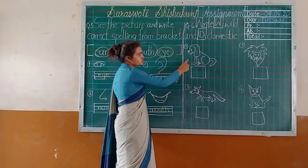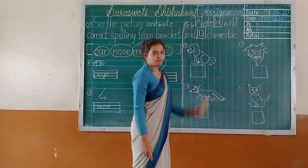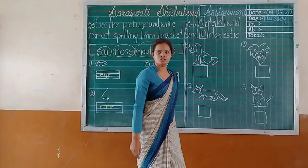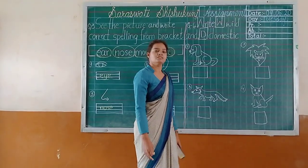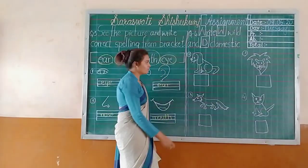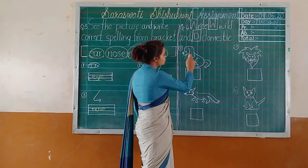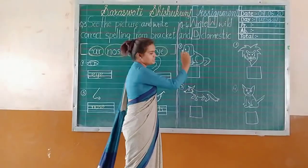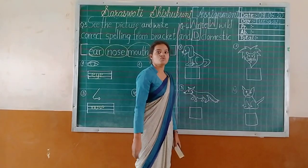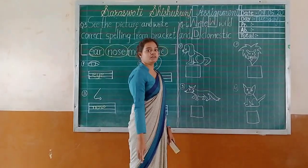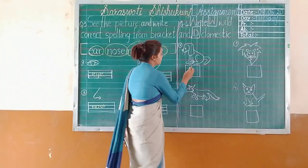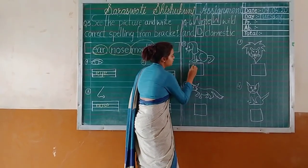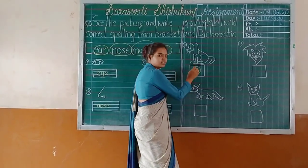See here, the first picture — do you know which animal it is? It is a dog. You can see them near your home. Dog is a domestic animal, so what will you write here? Dog is a domestic animal, so write capital D.